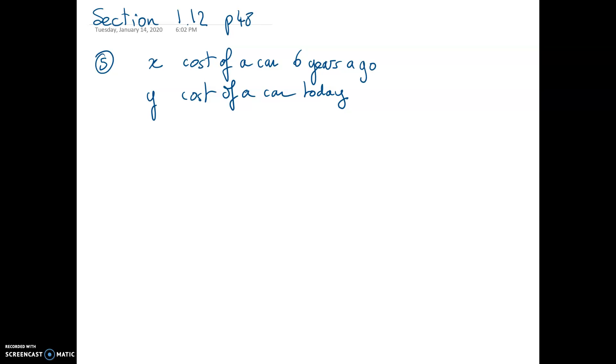On problem number five, a certain new car costs $5,000 more than the same model new car cost six years ago. Together, a new model today and six years ago cost $64,000. What was the cost of each? So the question is, find the cost of a car today and find the cost of a car six years ago.